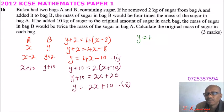So we write Y is equals to 4X minus 10, we have Y is equals to 2X plus 10. This is a simultaneous equation. We want to eliminate, we can even eliminate Y.